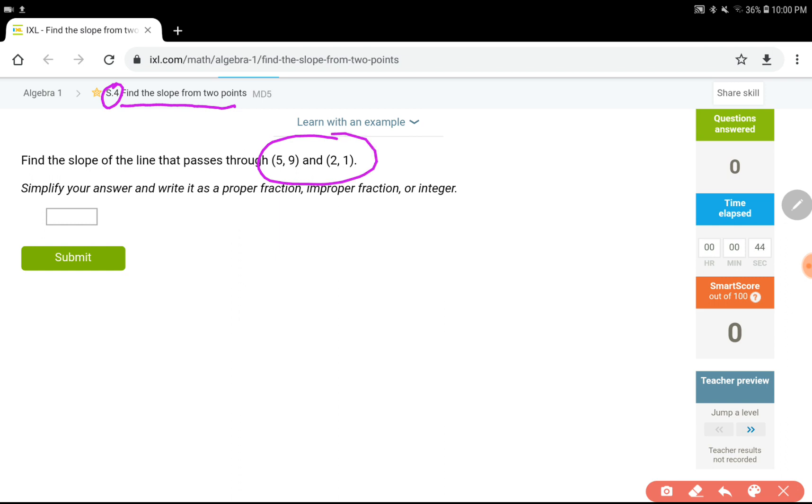With this, we are going to label each point as x1, y1, and x2, y2. And then,